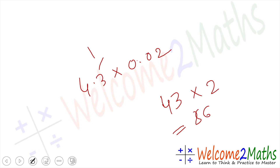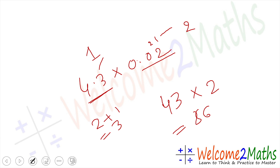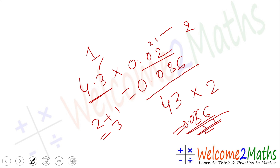Count the decimal places: 4.3 has one decimal place, and 0.02 has two decimal places. So 1 plus 2 gives three decimal places. In our product 86 we need to place the point three places from the right, but we only have two digits, so we add a zero in front: 0.086. That is our answer.